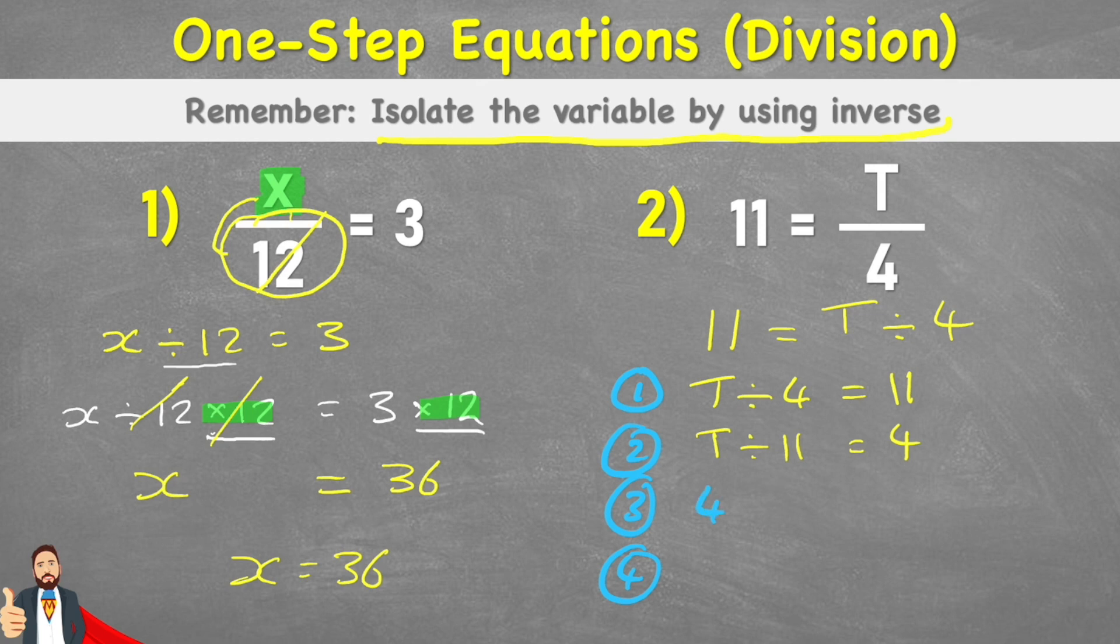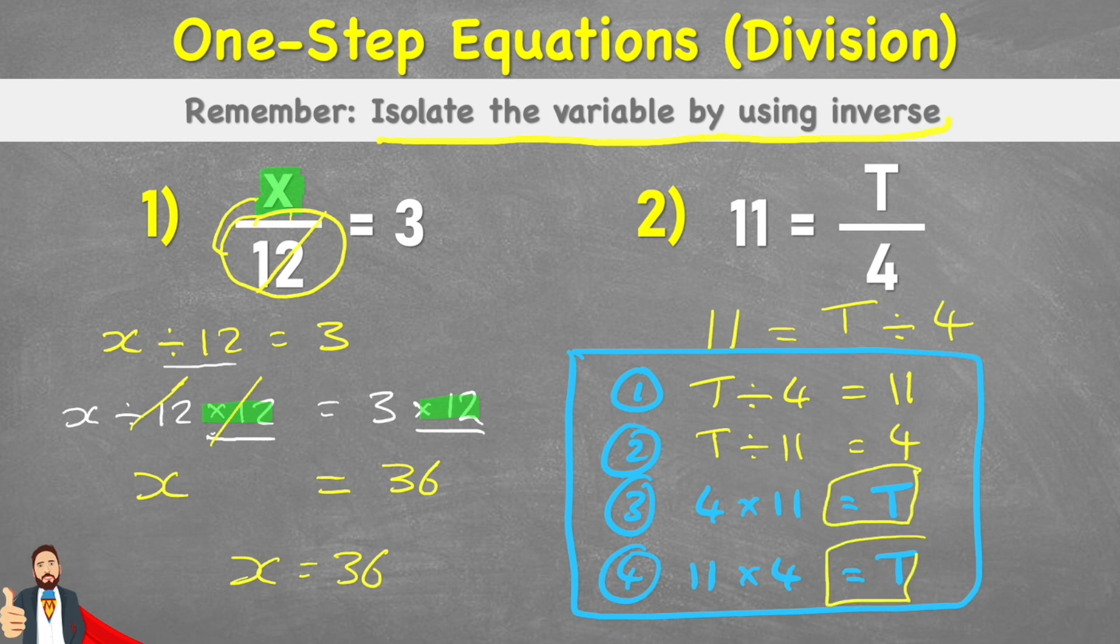But now I have two multiplication questions that are also part of this number family. I have 4 multiplied by 11 will therefore equal t. And also 11 multiplied by 4 also equals t. So these four questions are all part of the same number family. And what I can just do is I can just look for one where the value of t is on its own here at the end. Well, both of these are and I can just simply solve them.